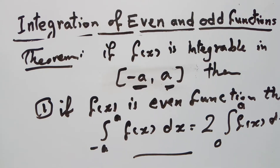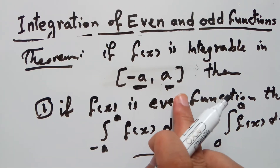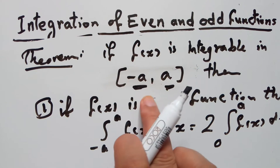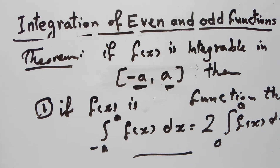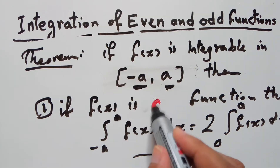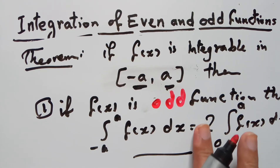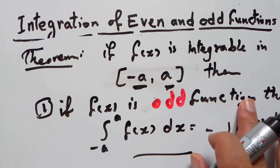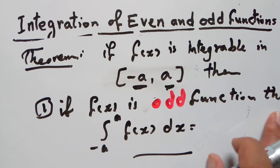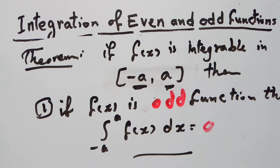Number two: if f(x) is an odd function, then the integral from -a to a of f(x) dx equals 0.